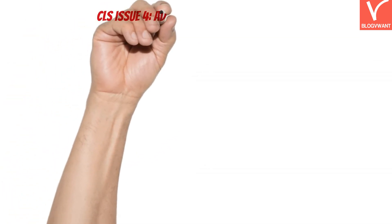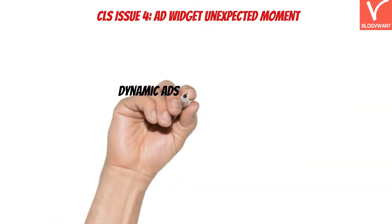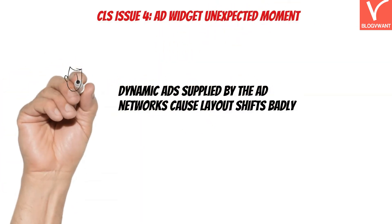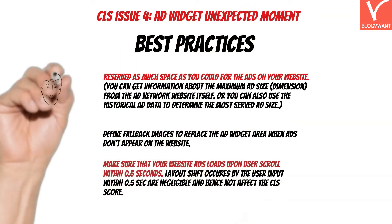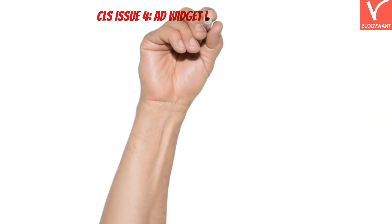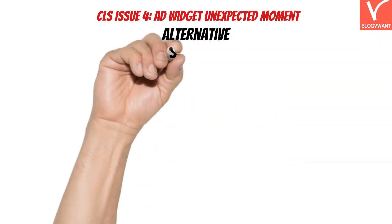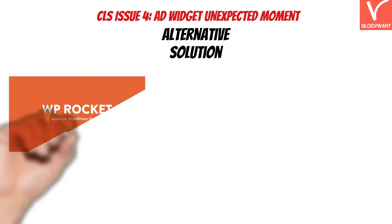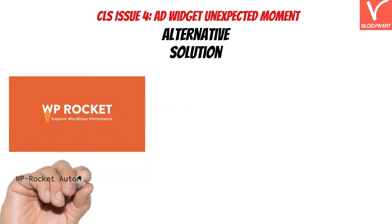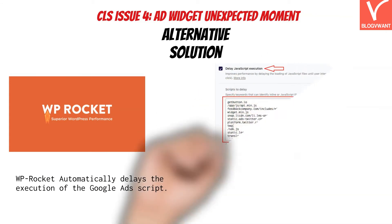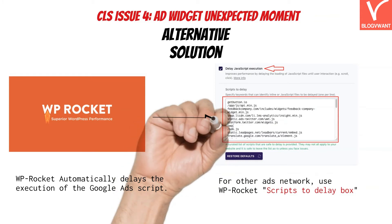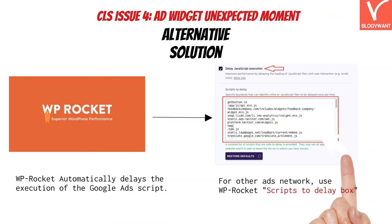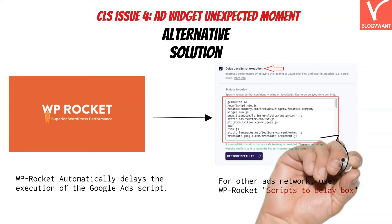Similar to JavaScript, dynamic ads supplied by ad networks cause layout shifts badly. In the modern world of advertising, almost all top ad networks use dynamic ads, so we cannot define a fixed space for them. The best solution is the WP Rocket plugin approach. WP Rocket automatically delays the execution of Google Ads scripts. Apart from this, if your website runs ads from other ad networks, you can manually insert the links of those scripts under the 'Scripts to Delay' box.